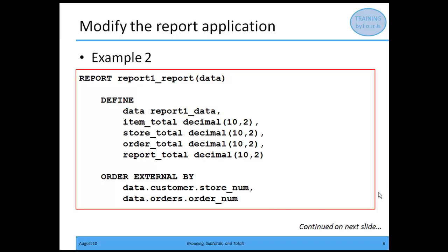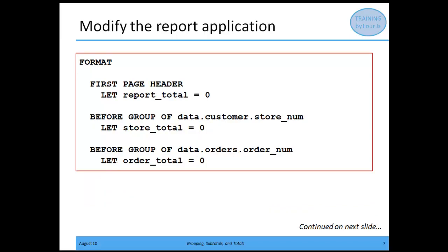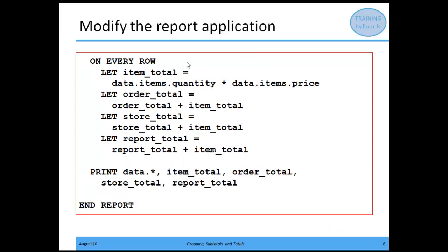My order external by doesn't change — it's still ordering by store num and then order num. However, now in my format block, before I start the report I'm going to let the report total equal to zero — initialize it to zero. Before group of store number, every time the store number changes, I reset the store total to zero. Every time the order number changes, I reset the order total to zero. Then on every row, every time a row of data arrives, I let the item total equal to quantity times price. I let the order total equal to the current order total plus the item total, the store total equal to the current store total plus item total, and the report total equal to the current report total plus item total — accumulating on every row.